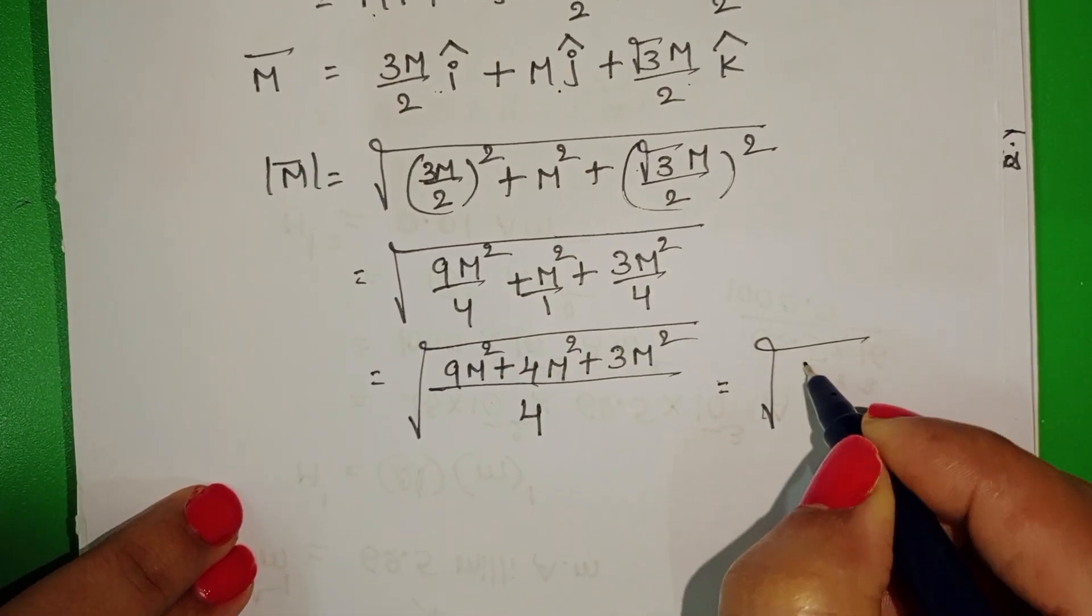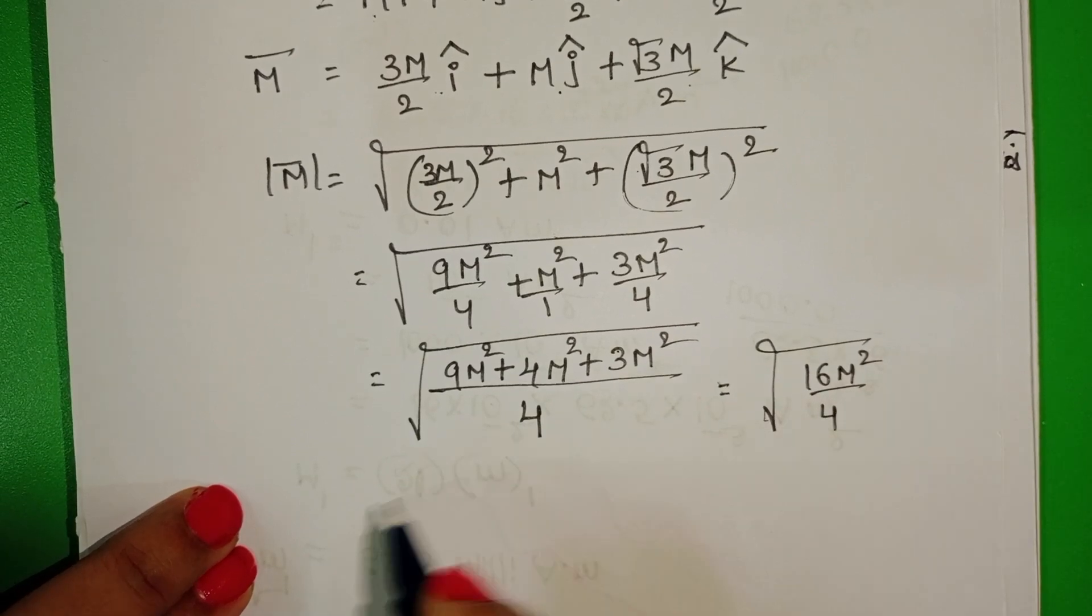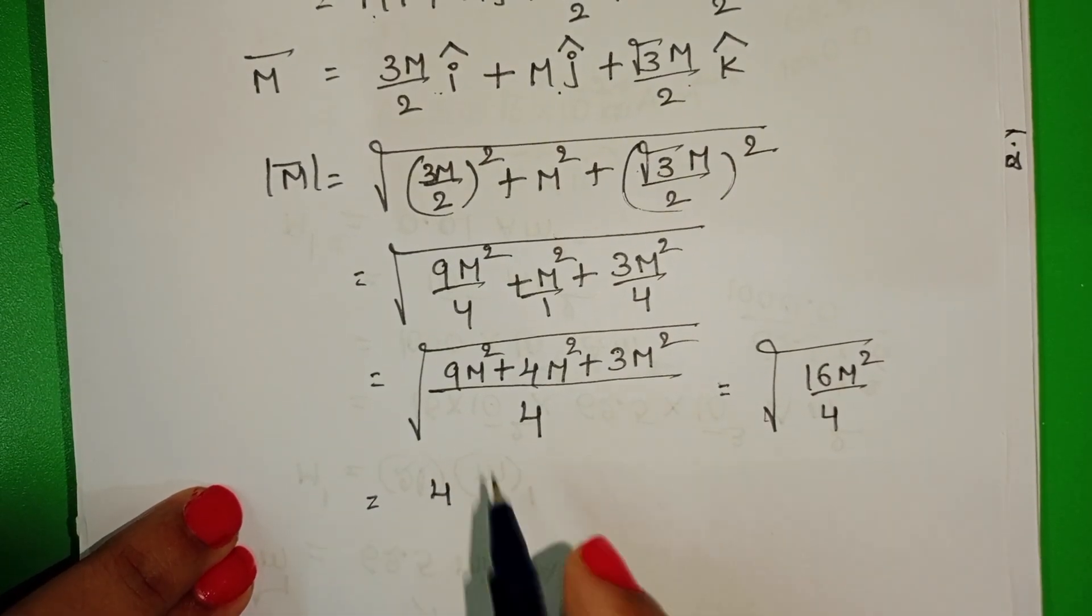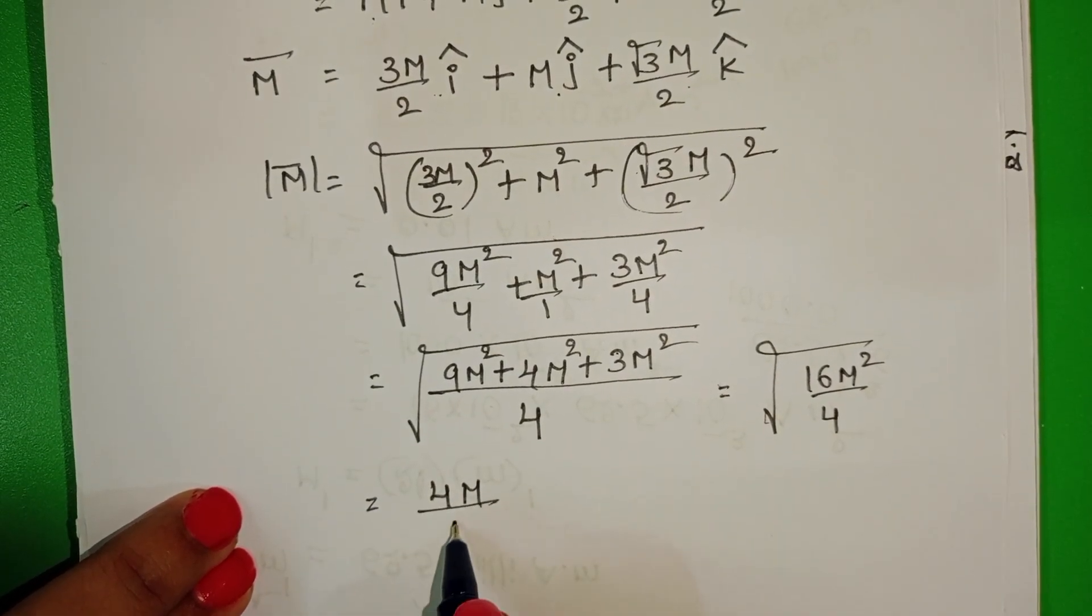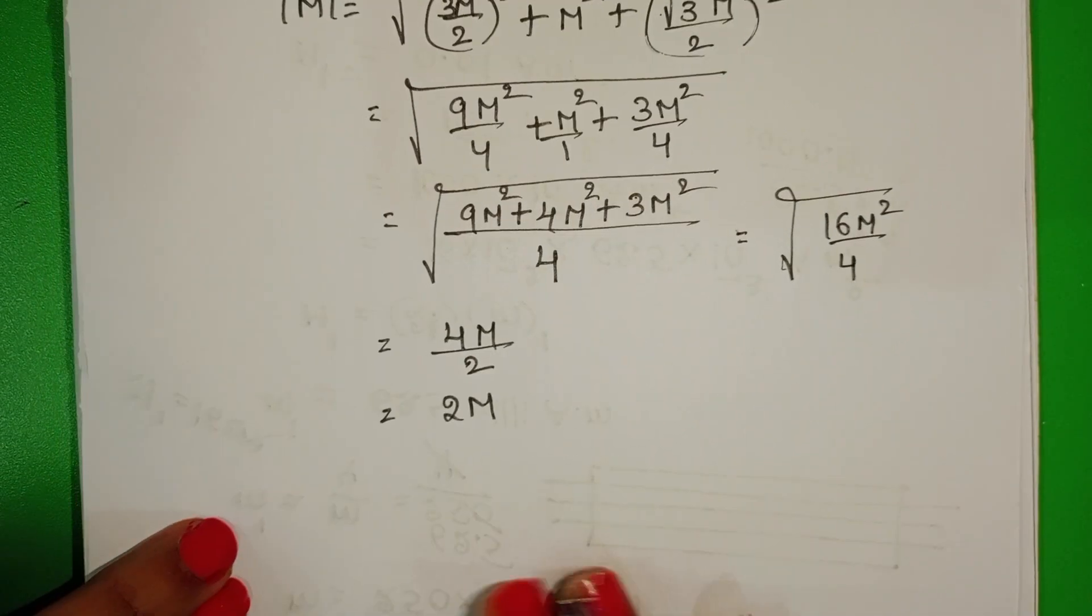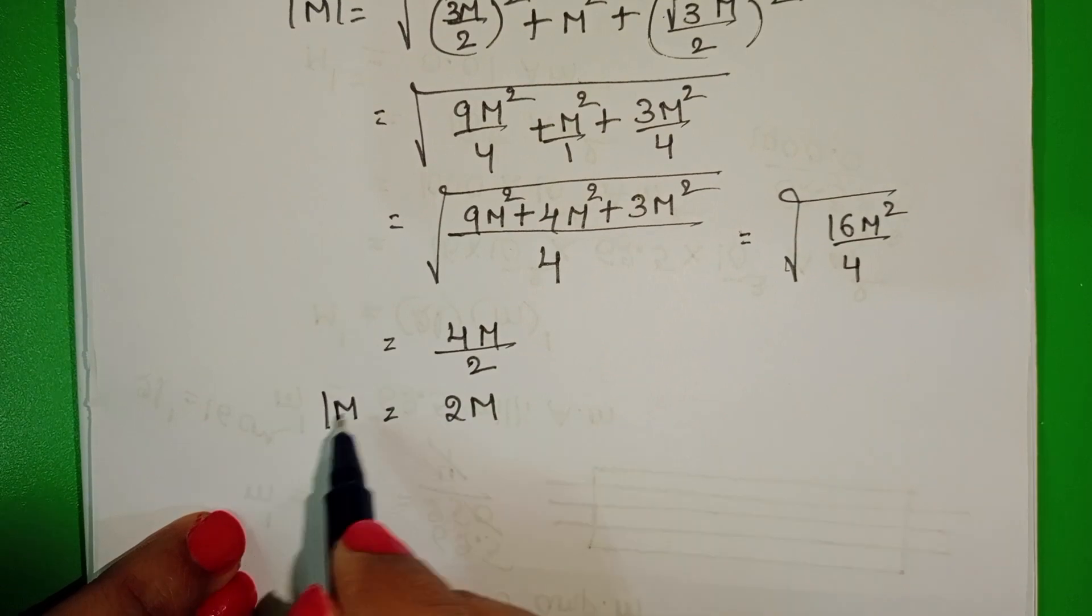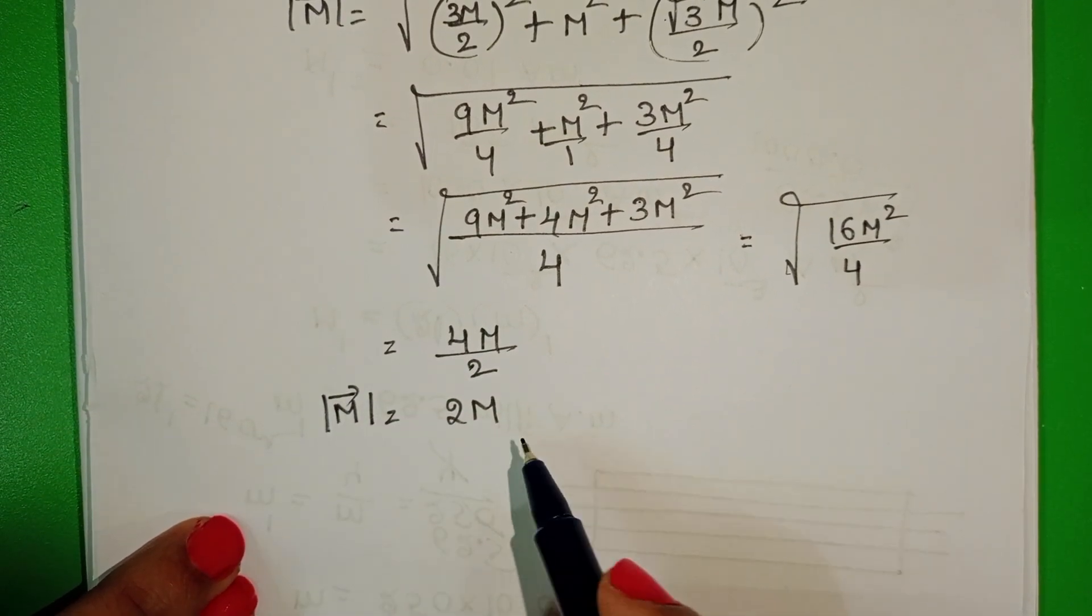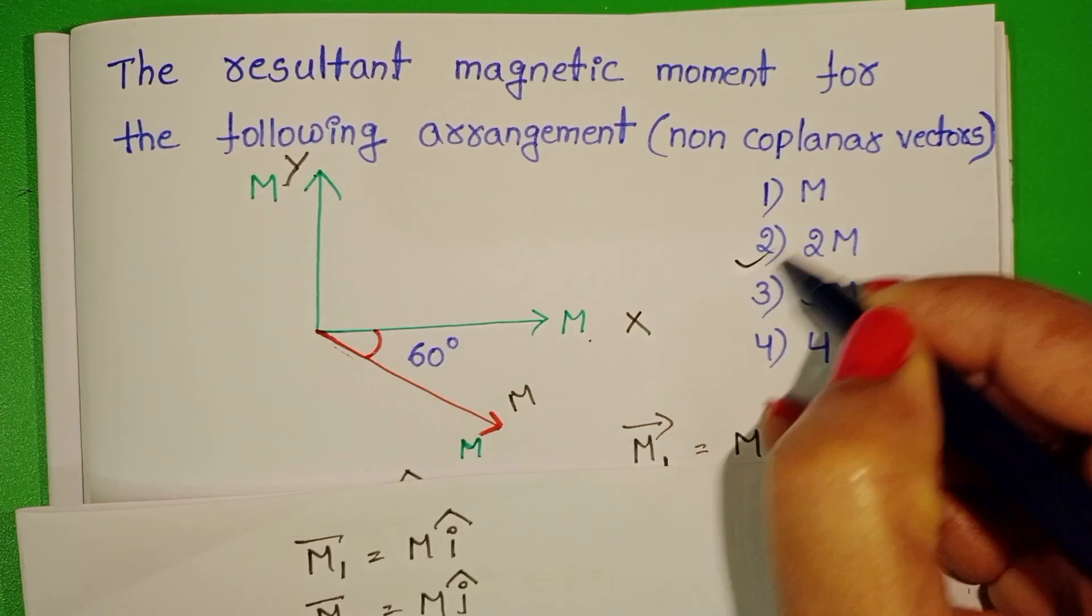Square root of 16 M square by 4, that equals 4 M by 2. The magnitude of the resultant magnetic moment is 2 M. Second option is correct.